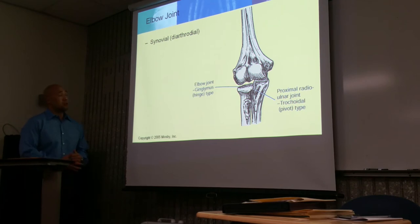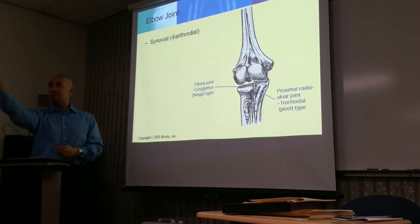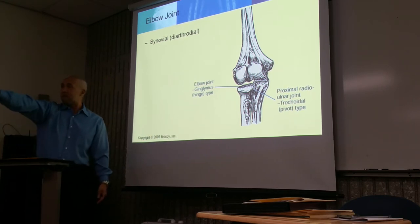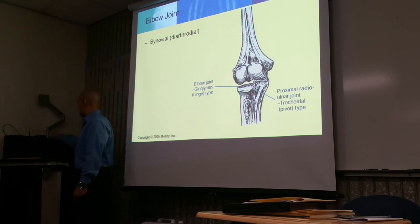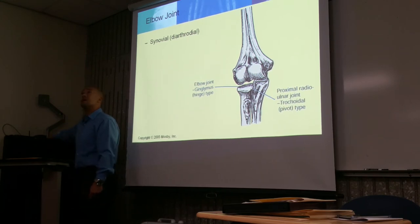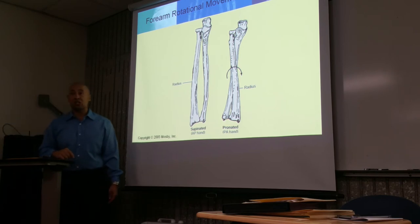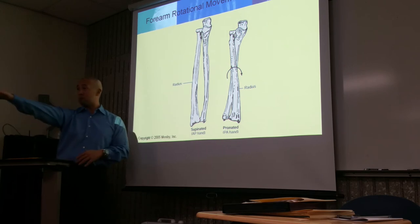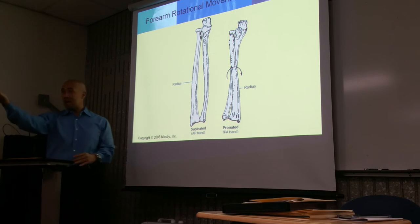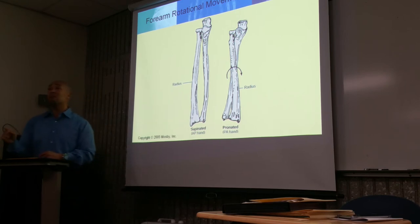The elbow is a synovial joint, meaning it's freely movable. The elbow joint is both a hinge type and a trochoid or pivotal type — because you can bend and extend it, and you can also rotate your arm. When your hand is in a true AP projection — palm up — the radius and ulna are going to be separated. When you pronate your hand, the two bones cross.